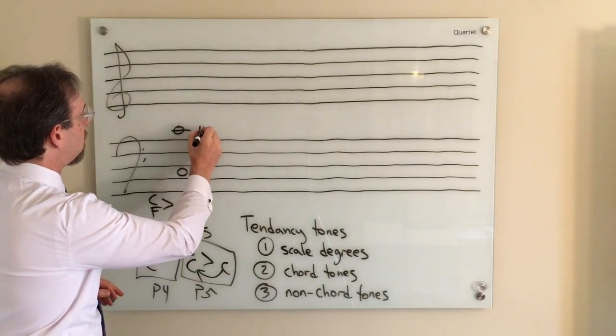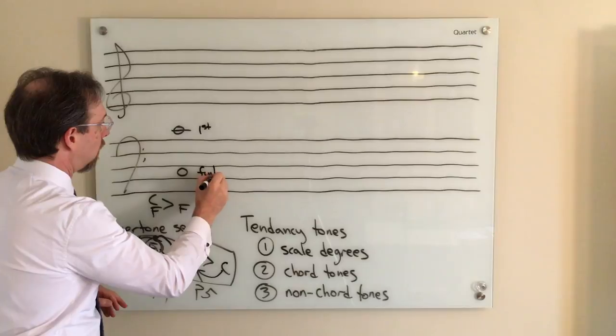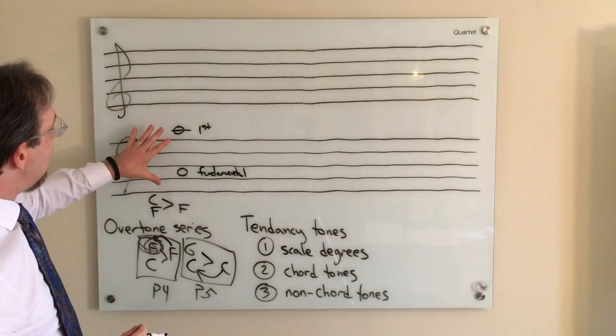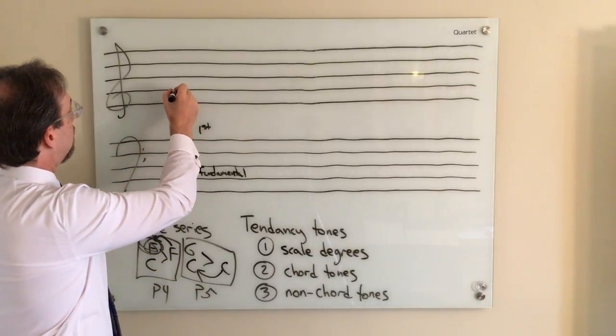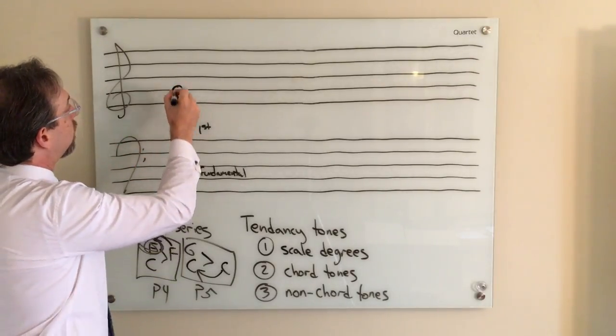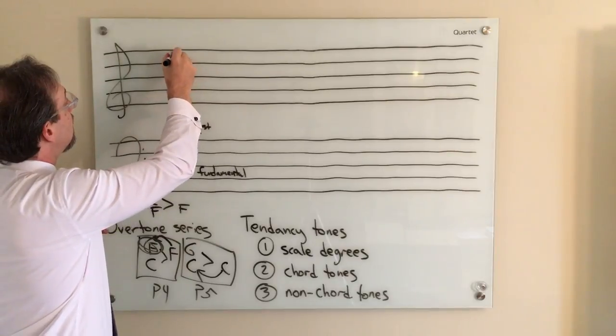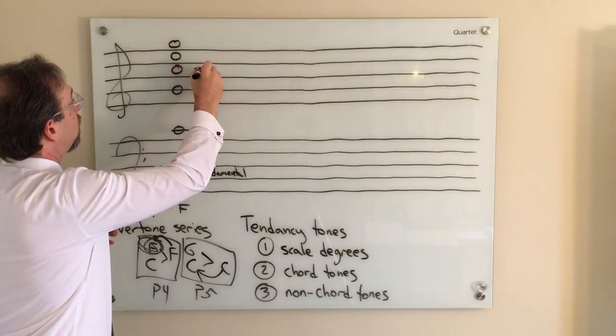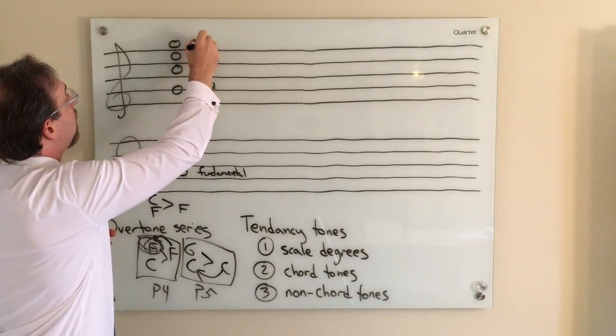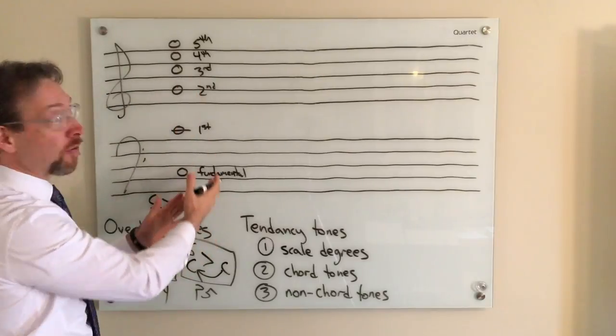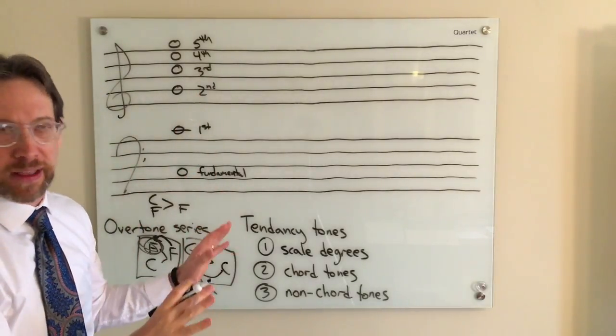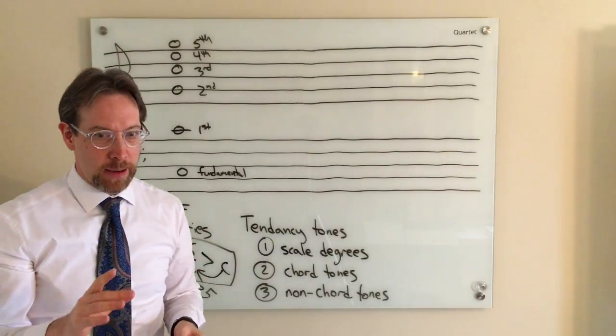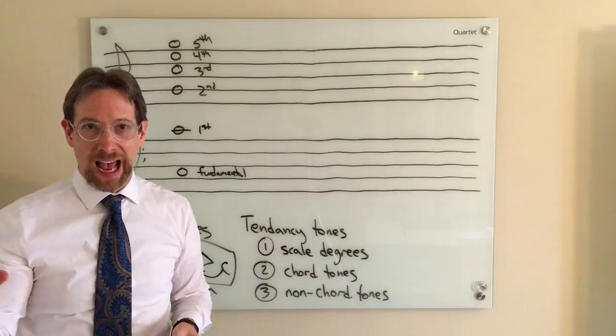But this is our first overtone. This is our fundamental. Now, after that, we get a G. That is our second overtone. Then a C, then an E, then a G. So that's our second overtone, third, fourth, and fifth overtone. So these are referring to overtones, not to be confused with intervals or anything like that. Those are our overtones. And one thing that's really interesting, a quick sidetrack.